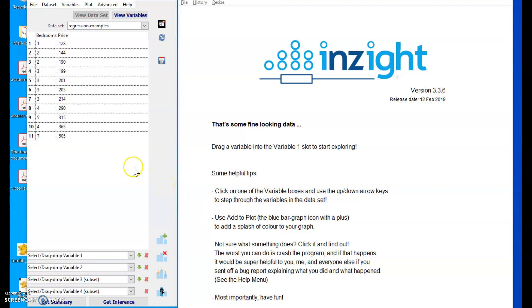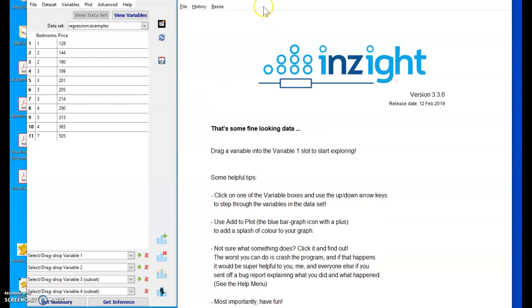Here's a quick demonstration on how to test a regression slope coefficient for significance. I've got a tiny data set here with two quantitative variables: the number of bedrooms in 11 homes and the price that they sold for.